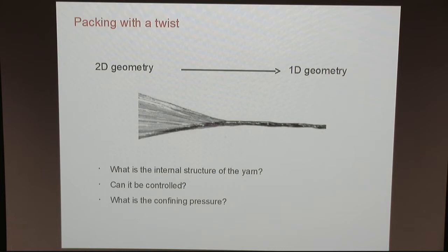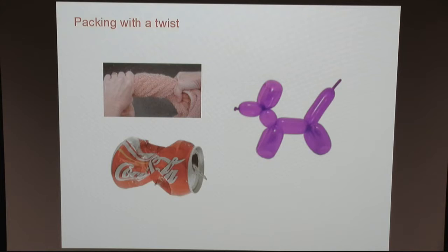The kind of questions you can ask are: what's the internal structure of the yarn? It should be very complicated, related to the wrinkles that you see. Can you control the internal structure? And since you're packing something, what's the confining pressure, because it's going to the center but I don't apply anything at the center. This is very general — if you take a towel and it's wet and you twist it, you know you can expel the water. It's a very common experiment. And if you're creative, you can even make balloon dogs — it's always related to a twist and there's always some compaction in the middle.